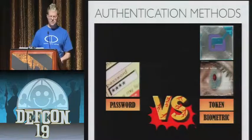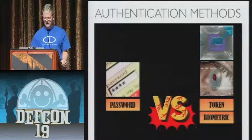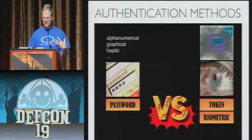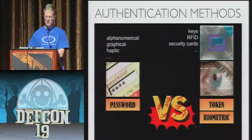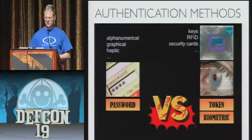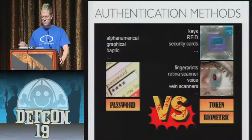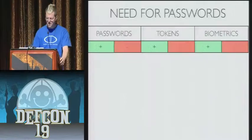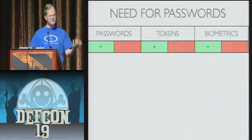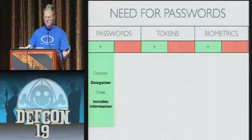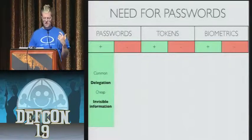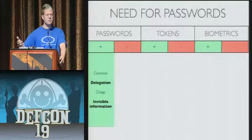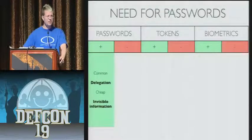Here are some basic authentication methods — what passwords are competing against. A password is something you remember, versus something you have — a key, RFID card, or security card — or something that is part of you, a biometric. Everyone has advantages and disadvantages. With passwords, the big advantages are that the information is invisible — no one knows if you have it — and it can be delegated. You can give someone your password, and if they get it, you can change it and maintain security.